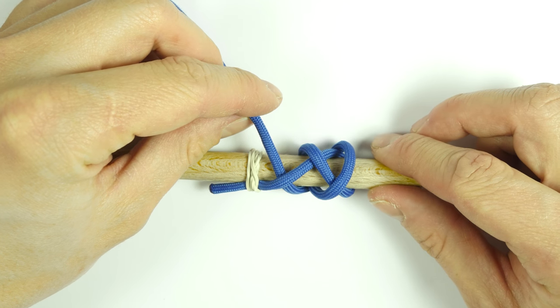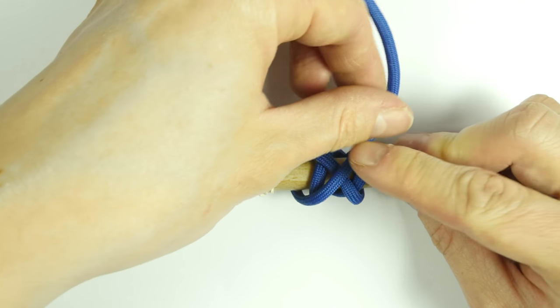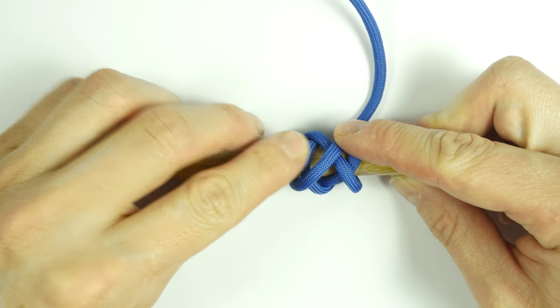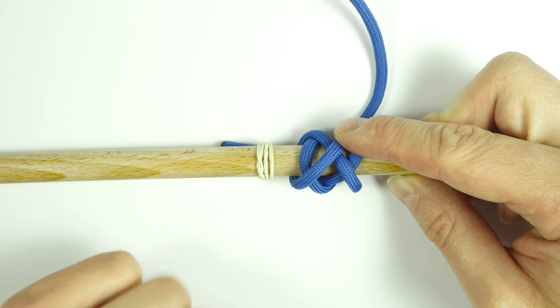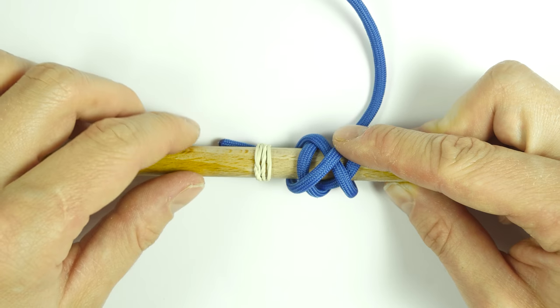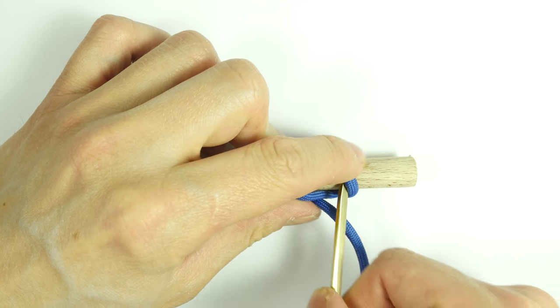Like this. Now, from left to right, pass over two, going parallel to the standing end on its left, so over two, then under one.